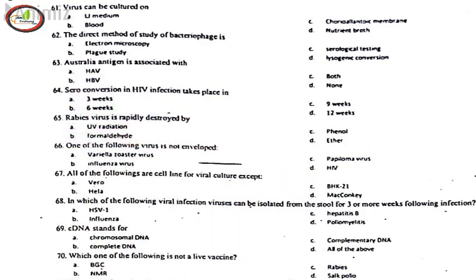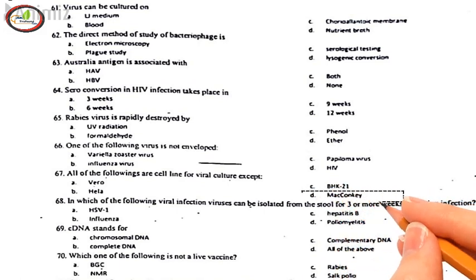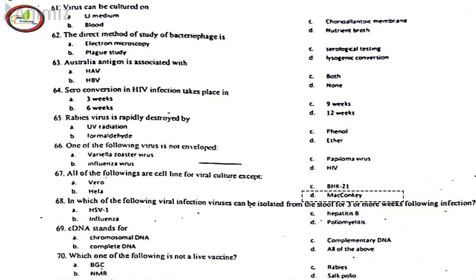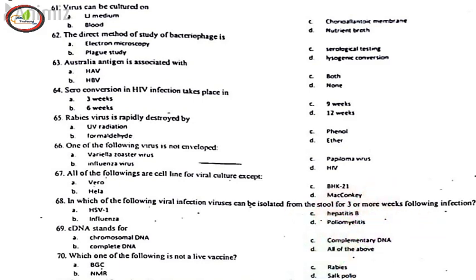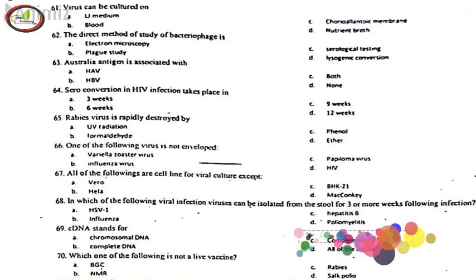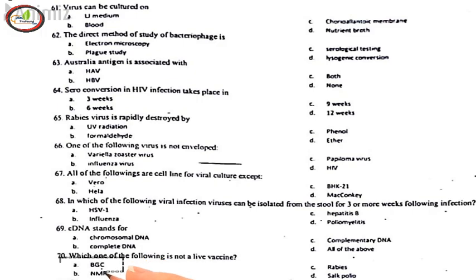66. One of the following virus is not enveloped, C. Papilloma virus. 67. All of the following are cell lines for viral culture except, D. MacConkey. 68. In which of the following viral infections can viruses be isolated from the stool for three or more weeks following infection? D. Poliomyelitis. 69. cDNA stands for, C. Complementary DNA. 70. Which one of the following is not a live vaccine? A. BCG.